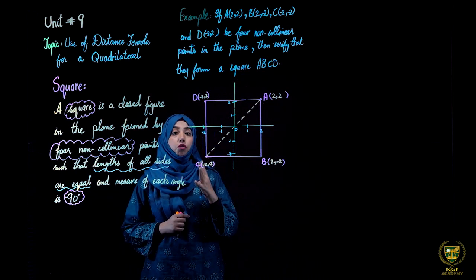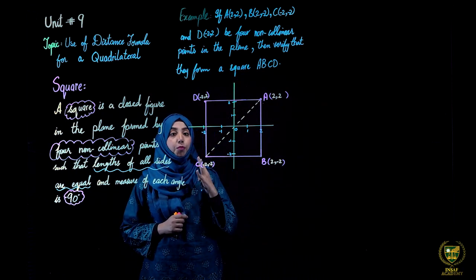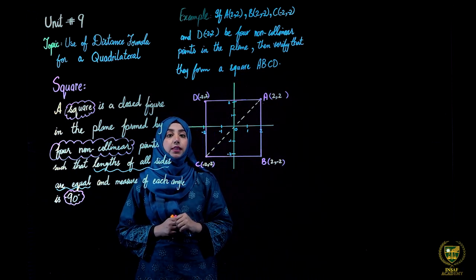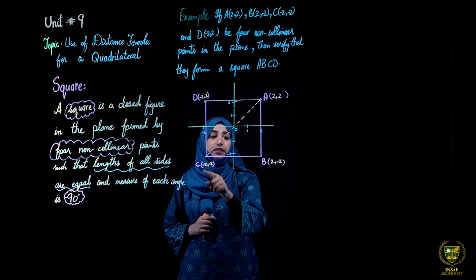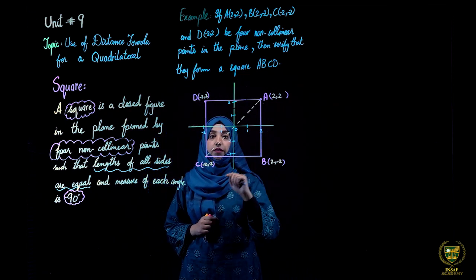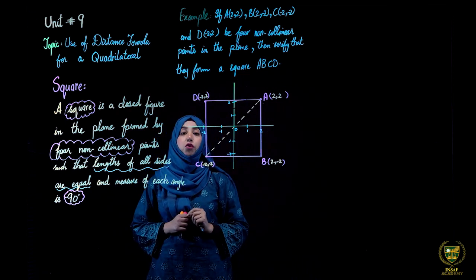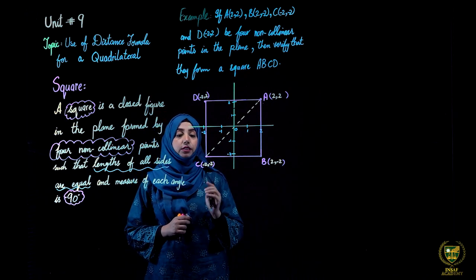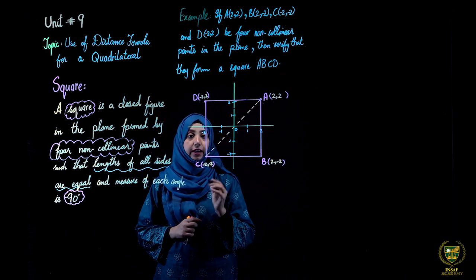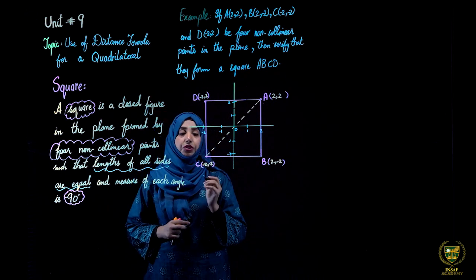We have to prove that the four non-collinear points form a square. Basically, we find the sides using the distance formula and then verify the conditions. Let us go to the solution.